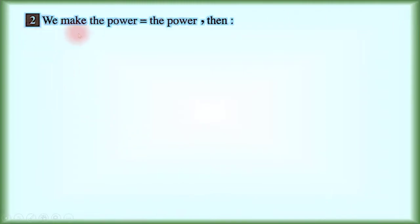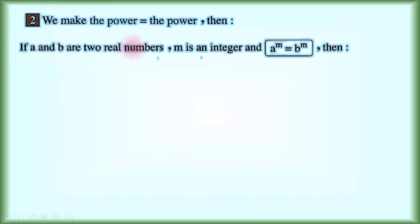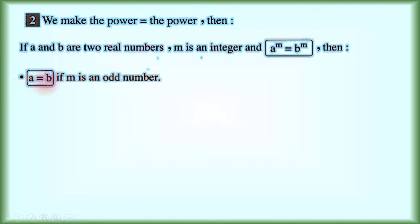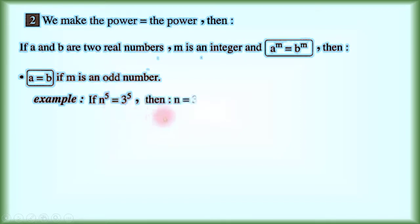Rule 2: we make the powers equal the powers. If a and b are two real numbers, m is an integer, and a power m equals b power m, then a equals b if m is an odd number. Example: if we have n power 5 equals 3 power 5. Because the powers are the same and the power is an odd number, then the bases are equal, so n equals 3.